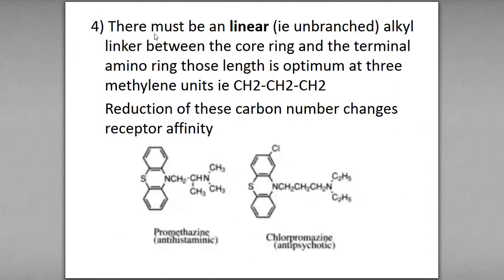There must be a linear, unbranched alkyl linker between the core ring and the terminal amino ring. The optimal length is 3 methylene units — CH2, CH2, CH2. So between the phenothiazine ring and the terminal group, there are 3 carbon chains.